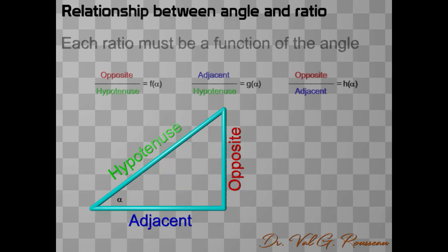We can write that opposite over hypotenuse is some function, let us call it f, of the angle alpha. Adjacent over hypotenuse is a different ratio, so it is another function, g, of the angle alpha. Same story for opposite over adjacent, which is another function, h, of the angle alpha.